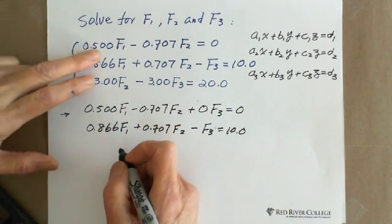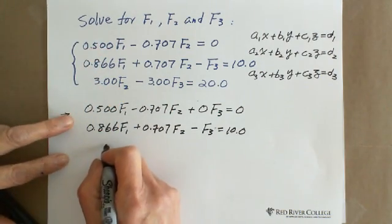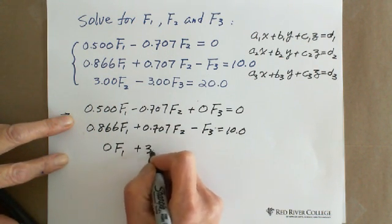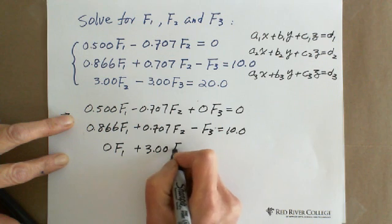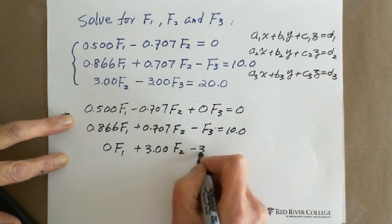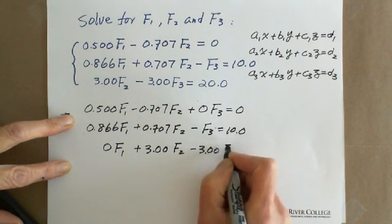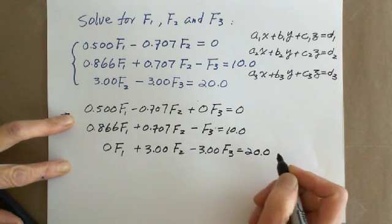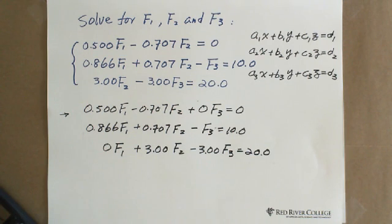The third one is missing F1, so the coefficient is zero. So you write 0F1 plus 3.00F2 minus 3.00F3 equals 20.0. When they're missing some unknown, you need a coefficient of zero. This is very important.